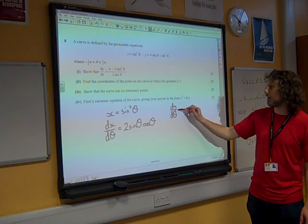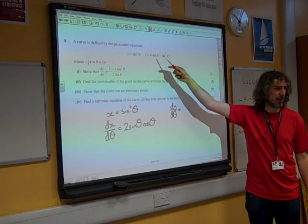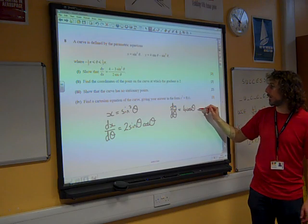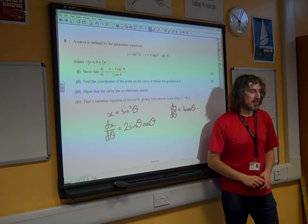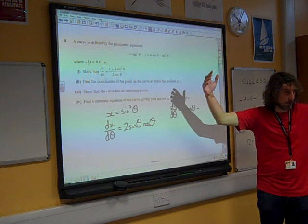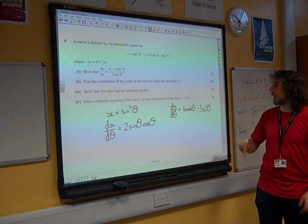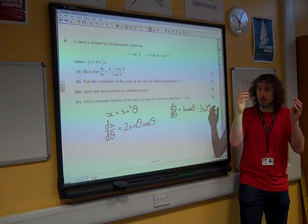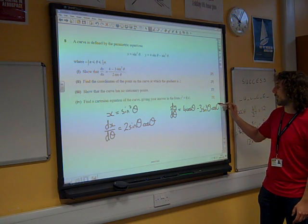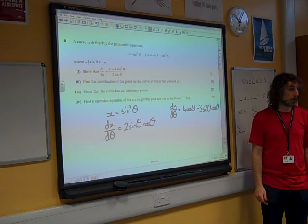dy by d theta. Actually fairly similar, we're going to differentiate 4 sine theta to get 4 cos theta. And we're going to differentiate sine cubed. Well, if you differentiate something cubed, you get 3 times the something squared. And then multiply by the derivative of the inside function, which is sine theta. So we've got cos theta coming in there.